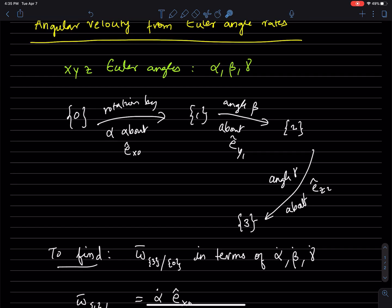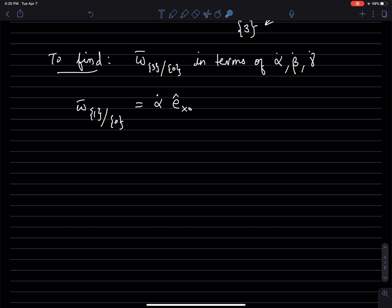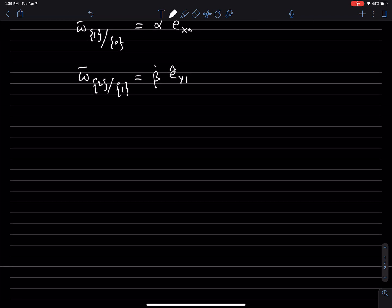Similarly, the angular velocity of frame 2 with respect to frame 1 is going to be beta dot times e_y1. Beta dot e_y1, and then frame 3 with respect to frame 2 is going to be gamma dot e_z2.